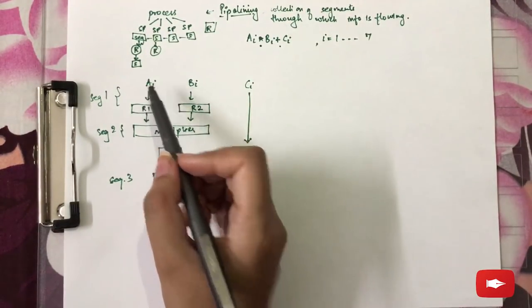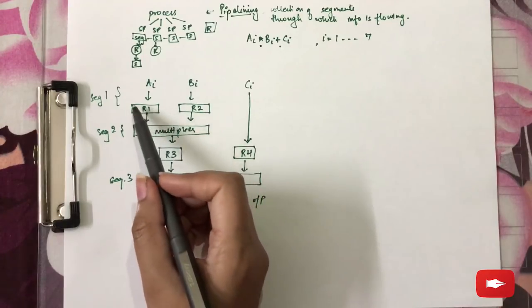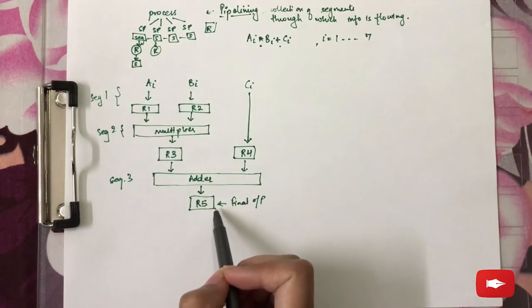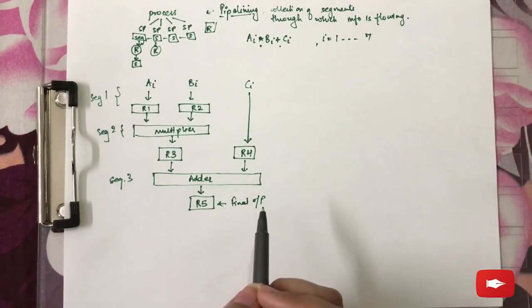So, we have three segments. And every segment's result is being stored into registers. And the final output is obtained again into a register that is R5 here.